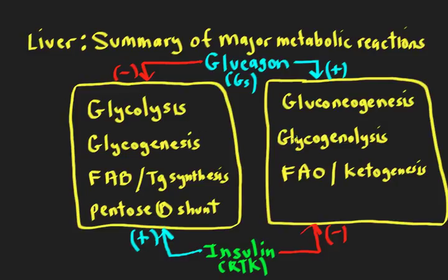This is the important framework: whenever you're thinking about what the effect of PKA is going to be on a particular enzyme, you can figure it out quite easily. If you know PKA is part of the glucagon pathway and you know what glucagon should be doing to reactions in the liver, you can figure out what PKA would be doing to that enzyme — you don't have to memorize it. That's a really important point because there are lots of enzymes and it gets complicated, especially when thinking about all the possible things that protein kinase A can phosphorylate.